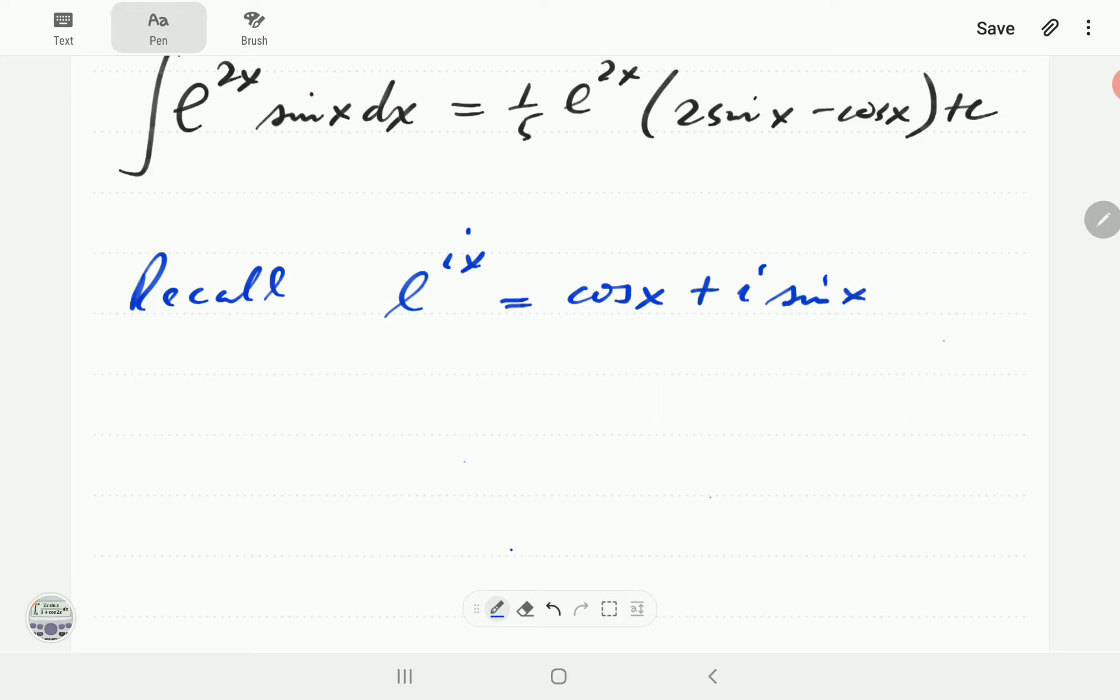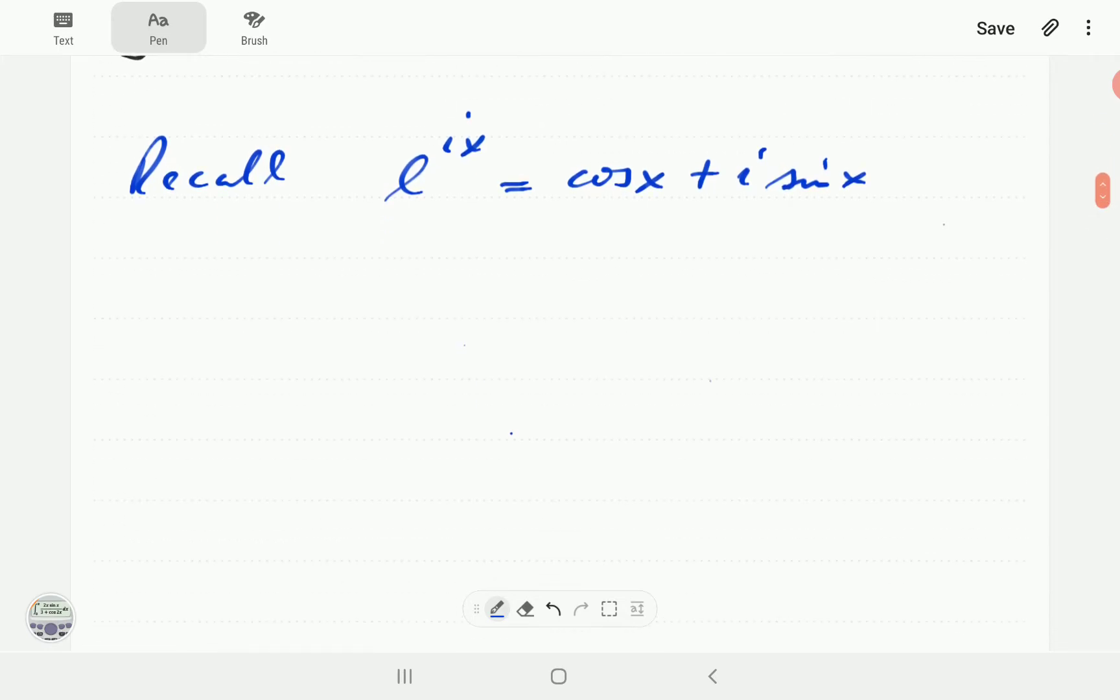Recall that E to the ix is cosine x plus i sine x. And then further to this, if we multiply both sides by E to the 2x, this thing is going to be E to the 2x cosine x plus i e to the 2x sine x.